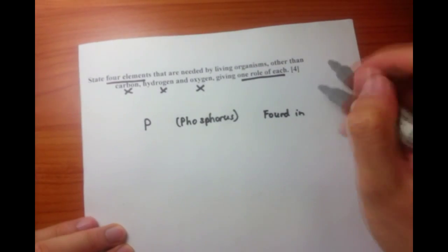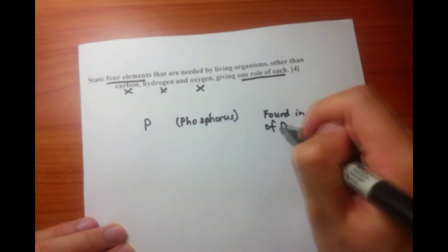First one is phosphorus, and this is found in the phosphate which is found in the nucleotides of DNA.